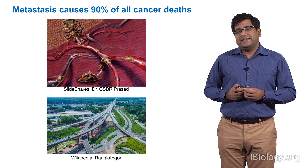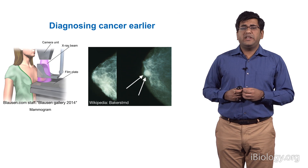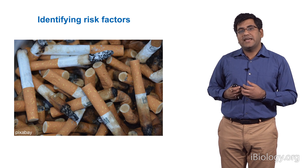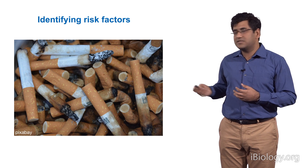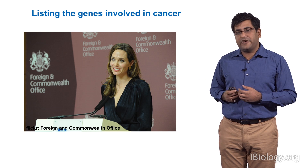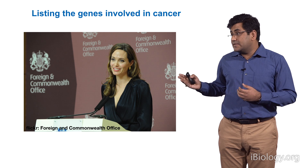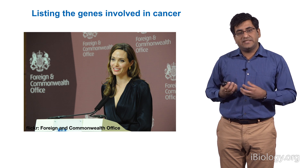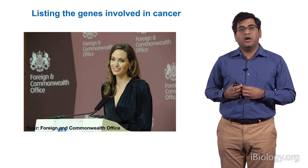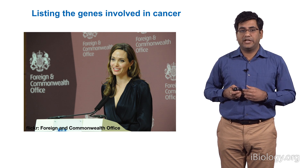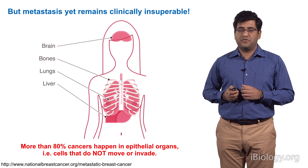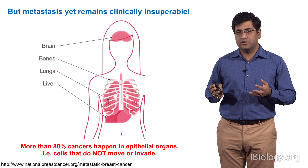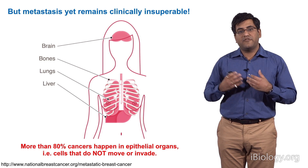The war on cancer was declared in 1971. We have made huge progress in diagnosing cancer earlier, such as with mammograms, in identifying risk factors like smoking causing lung cancer, and in identifying genes and mutations that drive cancer. For instance, mutation in BRCA1 is the reason many women get ovarian and breast cancer — the reason Angelina Jolie had to undergo a double mastectomy. But despite this progress, metastasis — the spread of cancer cells from one organ to another — remains clinically insurmountable. We are still trying to scratch the surface of how exactly this process happens.